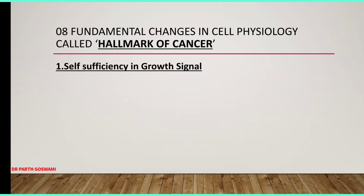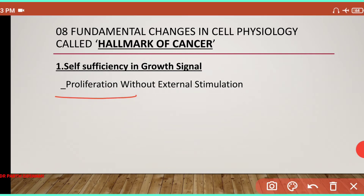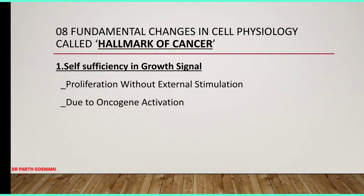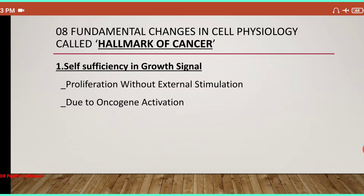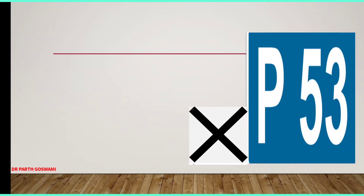The first fundamental change is self-sufficiency in the growth signal. Cancer occurs because the cell continuously gets proliferated without any external stimulus. Without any stimulation, the cell will proliferate, and that is why cancer occurs. This is due to oncogene activation. Self-sufficiency in the growth signal means cell proliferation without any stimulation.